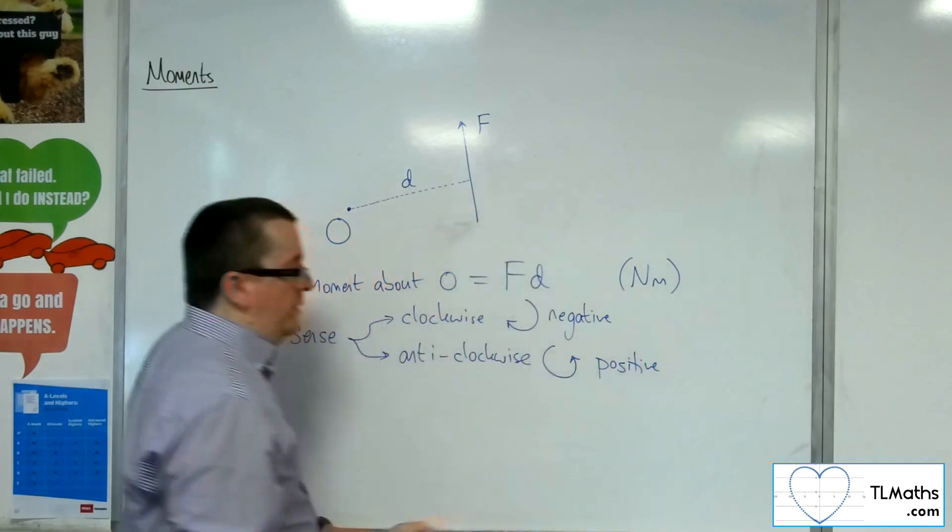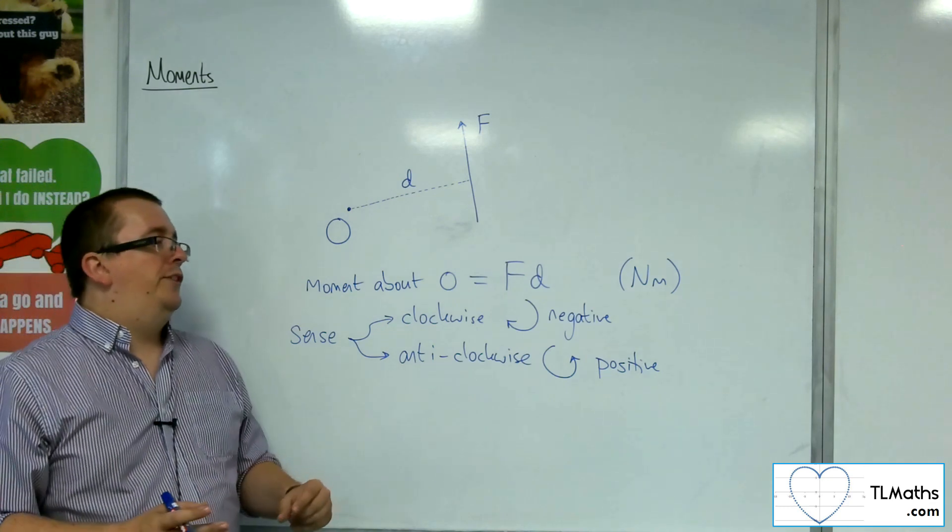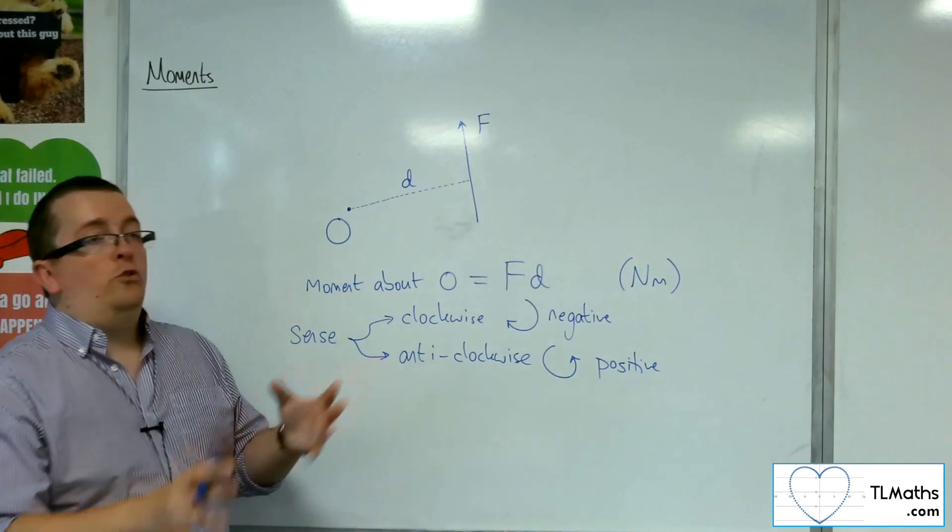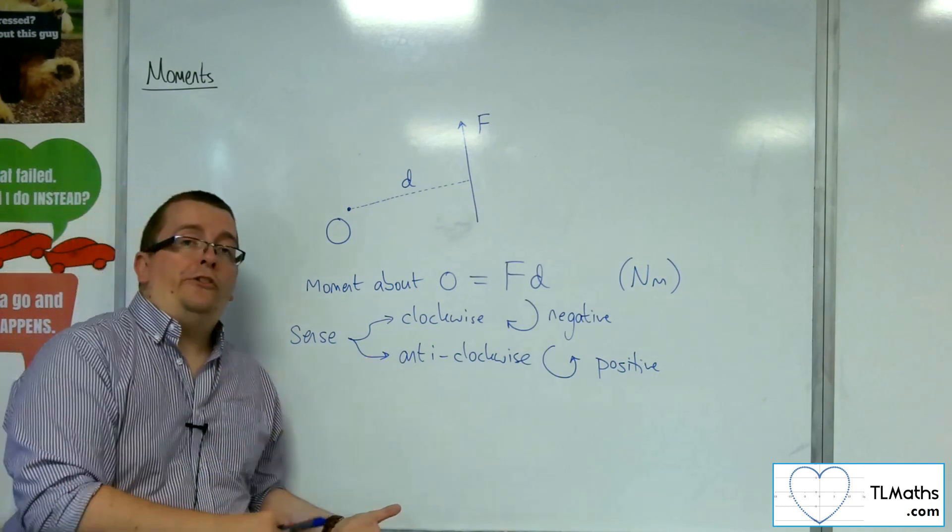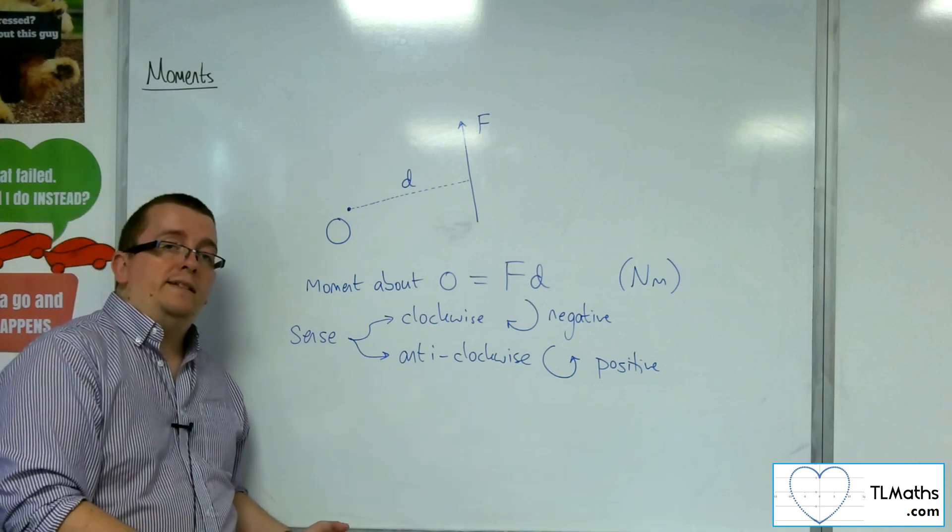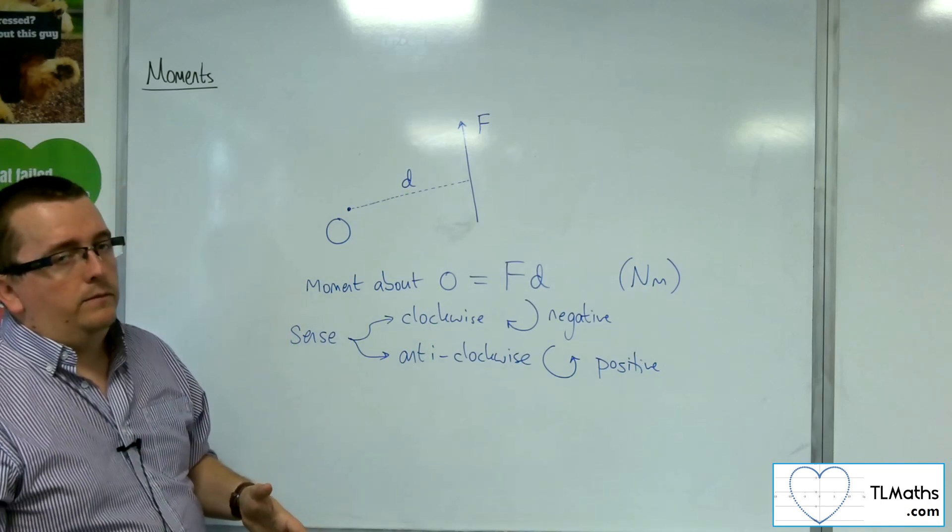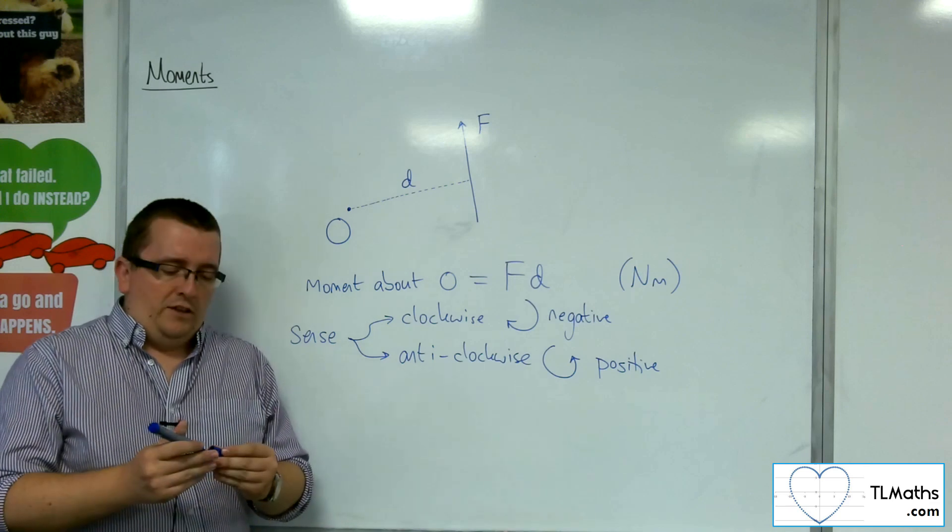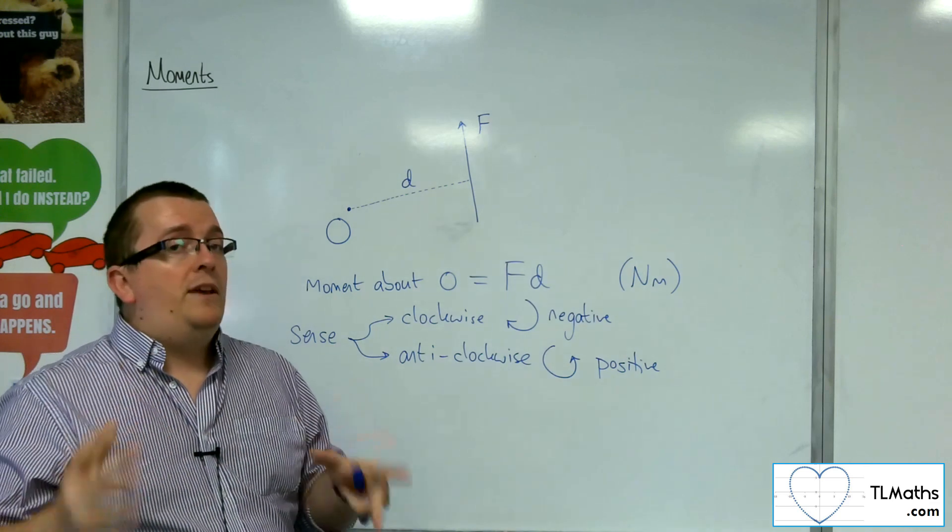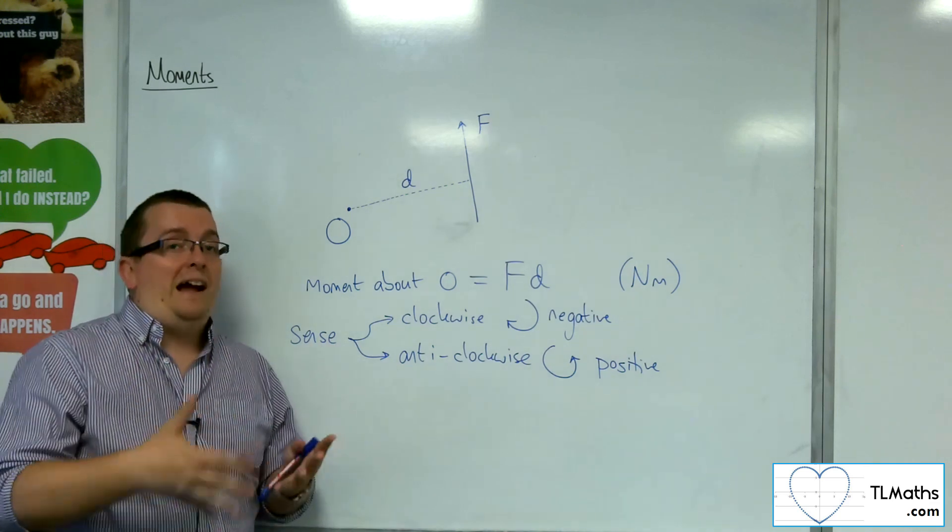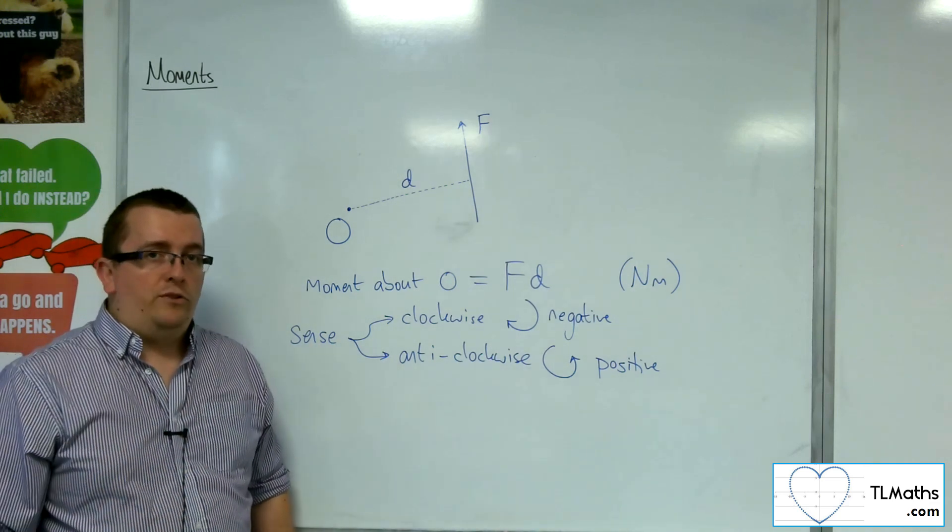So when we're combining moments, we want to determine is it clockwise or is it anticlockwise, and consequently one will be positive and one will be negative. So that's also to be taken into account. So what we'll want to do, just to start off with, is a few basic examples, so you can see how we can calculate the moment about a particular point.